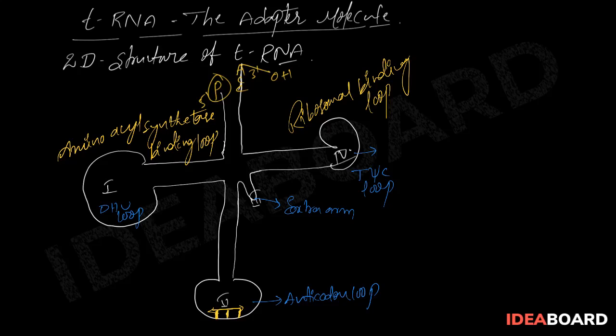In the tSiC loop, seven unpaired bases are present. Similarly, in the anticodon loop, seven unpaired bases are also present, and among these seven, three act as the anticodon. The tRNA plays an important role during translation, or synthesis of a polypeptide chain — it carries amino acids to the translational site. These amino acids are attached at the 3' end of the tRNA.